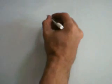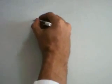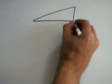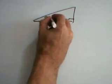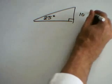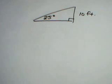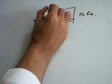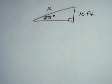Let's suppose that we have a triangle where this angle is 25 degrees, the opposite side is 10 feet, and the hypotenuse is unknown. And so we would like to compute the value of the hypotenuse.